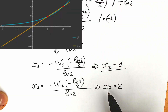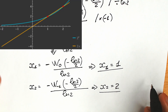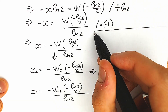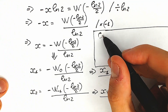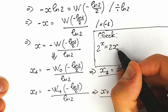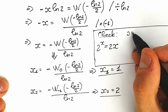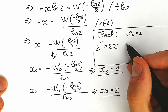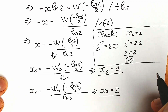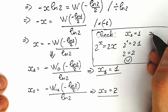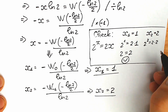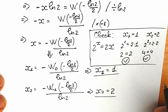Let's check real quick. In the beginning we had 2 to the x equal to 2x. Checking x₁ equal to 1: we have 2 to the power 1 equal to 2 times 1, which gives 2 equal to 2 — correct. For x₂ equal to 2: we have 2 to the power 2 equal to 2 times 2, giving 4 equal to 4 — this root is also correct.